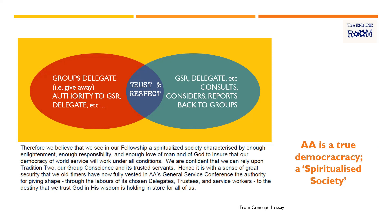AA is a true democracy — a spiritualized society. This diagram represents how, in particular through Tradition Two, groups delegate or give away authority to the GSR, the delegate, and so on. We talk about groups having the ultimate authority, but how do they express it? By giving it away — because it's the most spiritual thing one can do with authority. Trust and respect sit in the middle, and in return the GSR, the delegates, the board consult, consider, and report back to the groups.